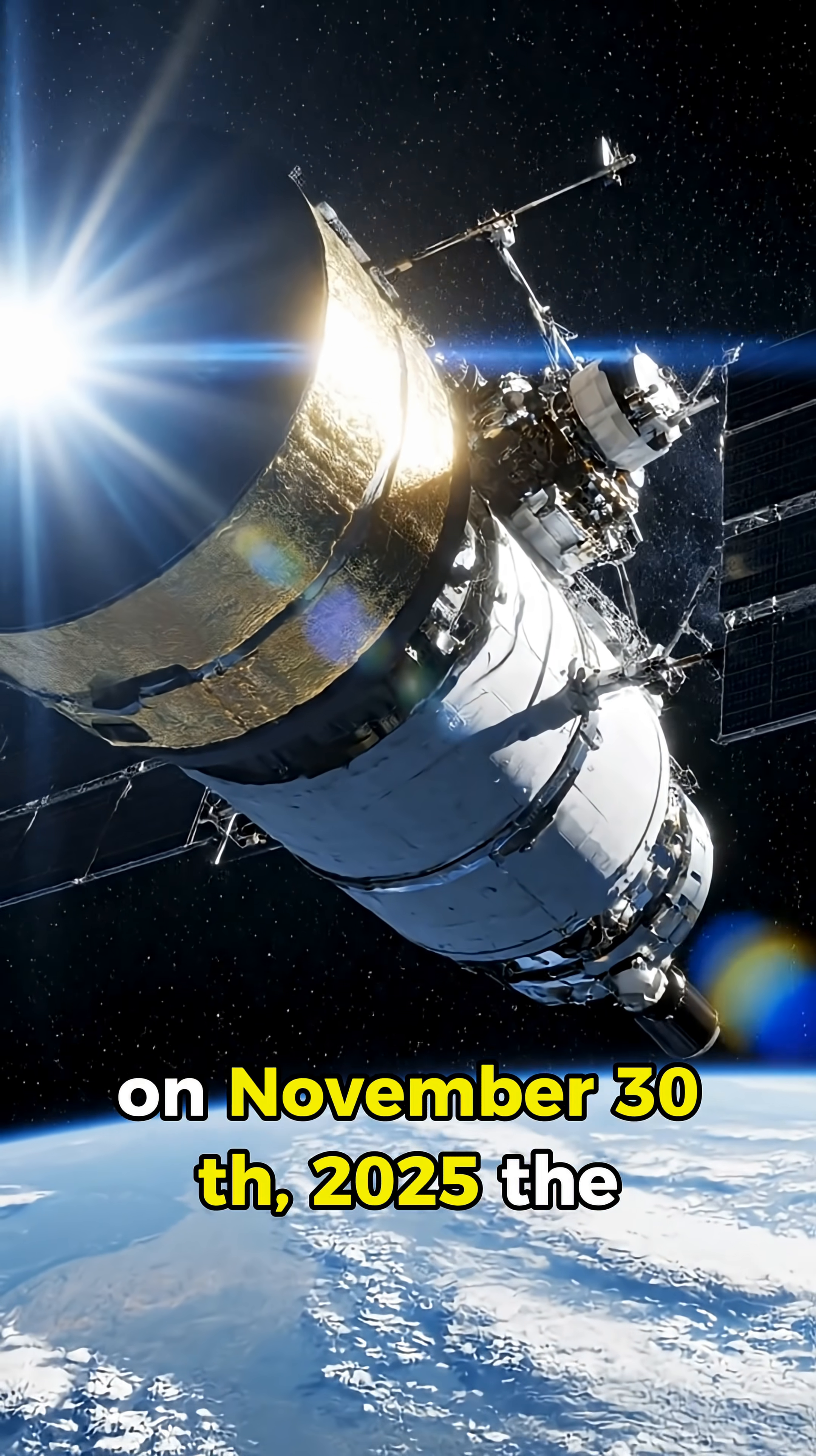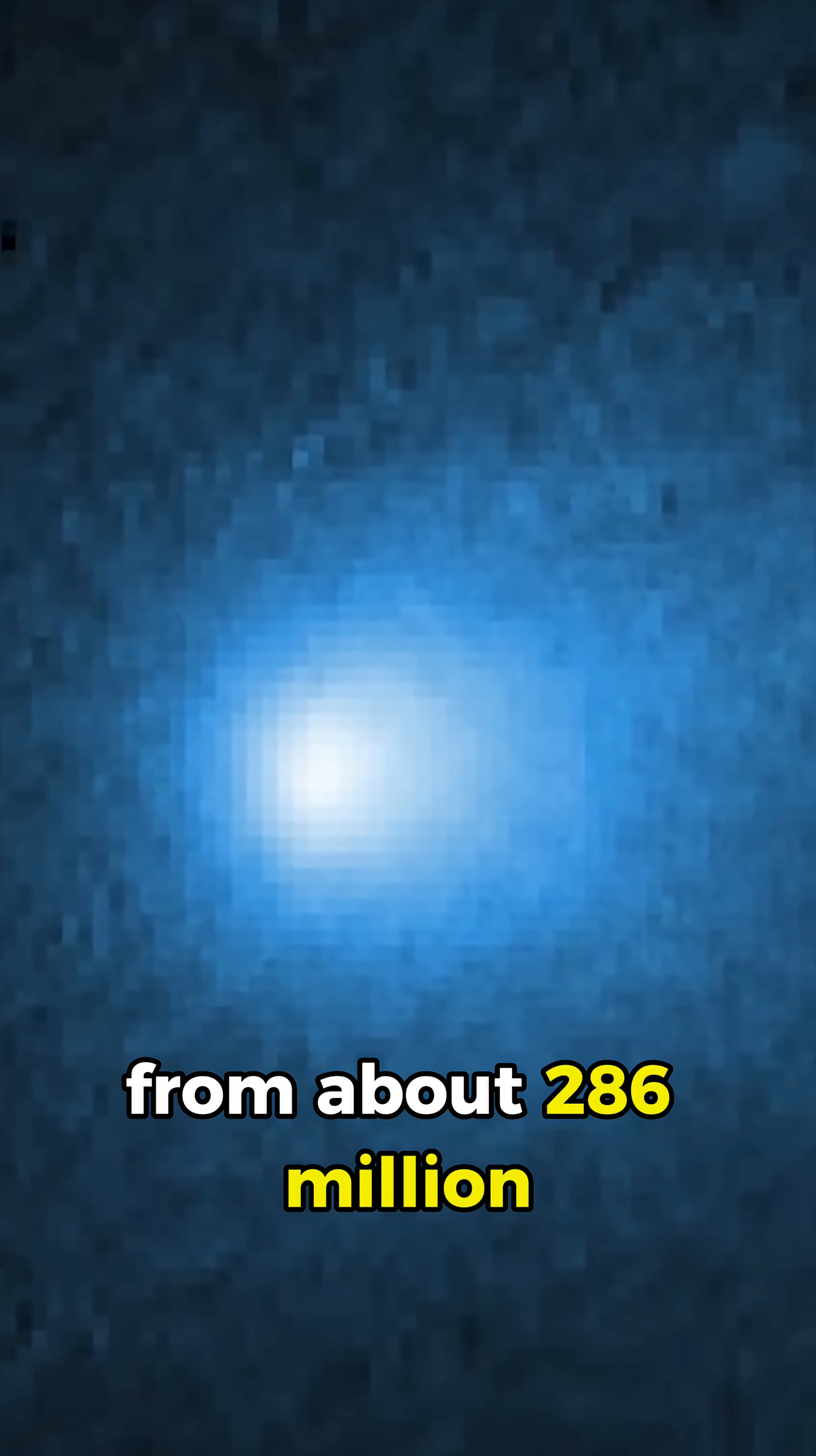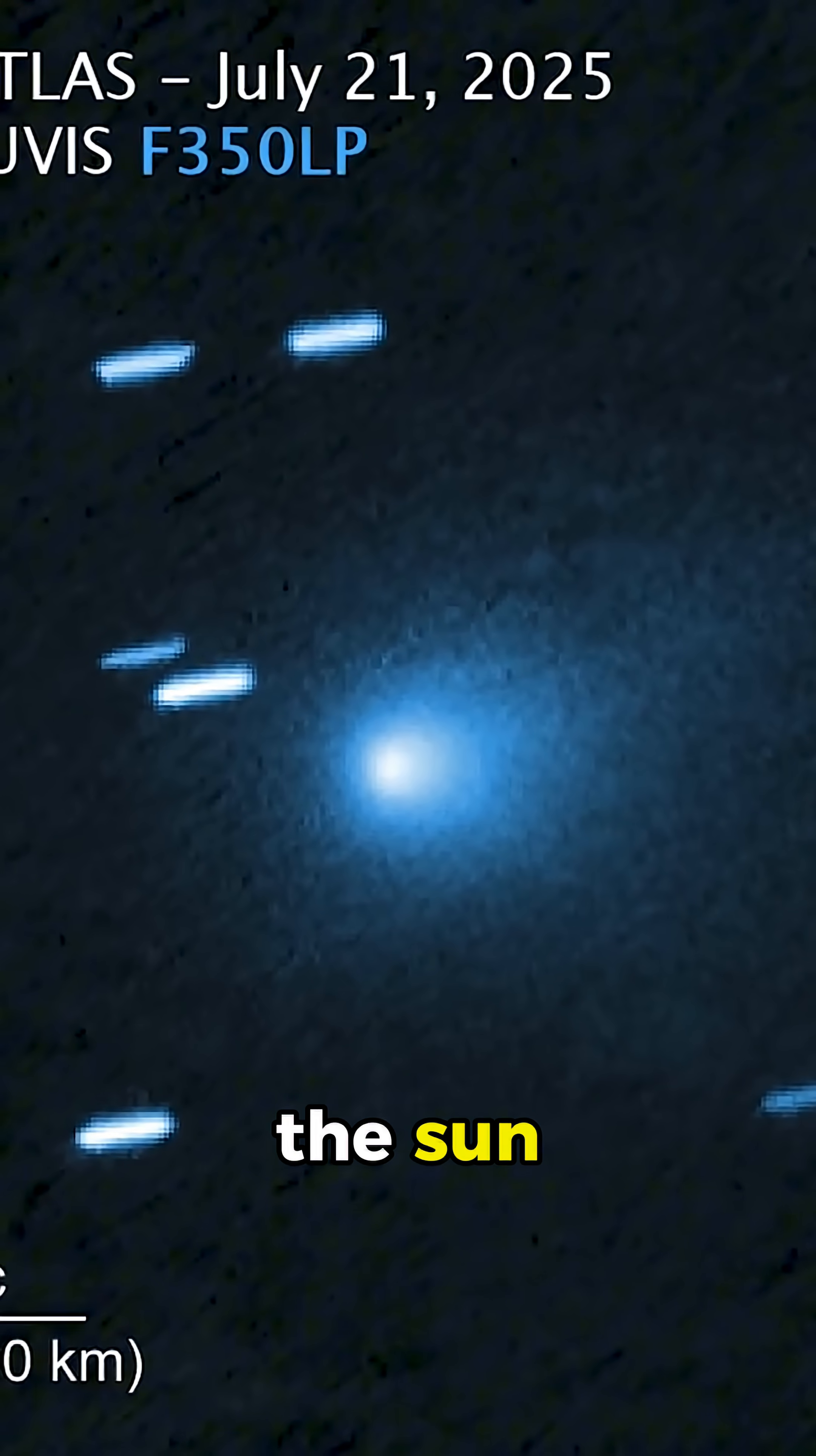On November 30, 2025, the Hubble Space Telescope captured a new image of the interstellar object 3I-Atlas from about 286 million kilometers away, roughly one month after it made its closest pass by the sun.